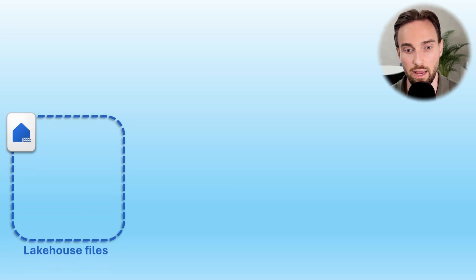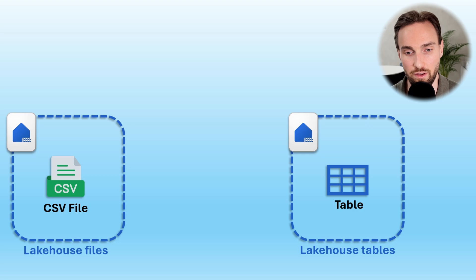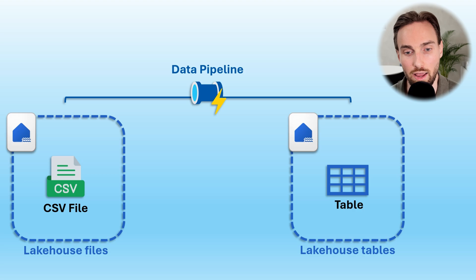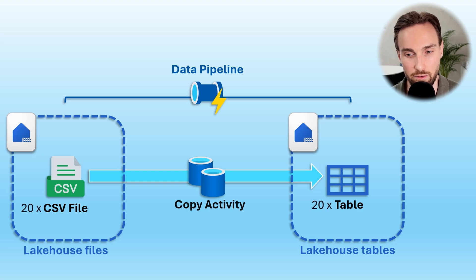First, let's imagine a situation where we have a CSV file in our lakehouse and we would like to copy it to a lakehouse table. Using data pipelines is one of the easiest ways to achieve this, and one copy activity in a pipeline is enough to handle this case. But what if instead of one file we had 20 files that we would like to copy to 20 different tables? That would mean adding 20 copy activities and configuring them separately — already quite time-consuming and making our pipeline far more complex.